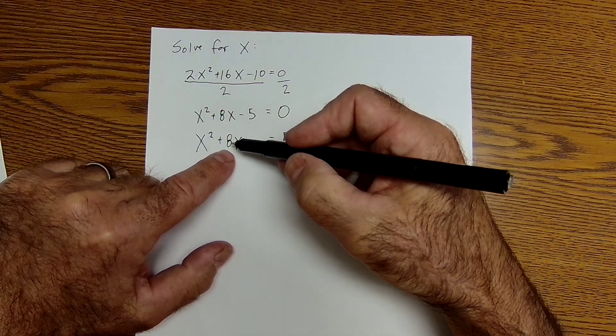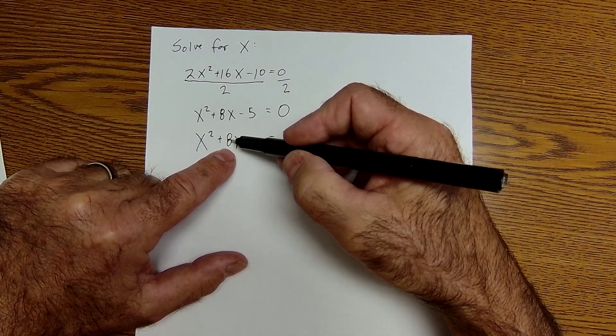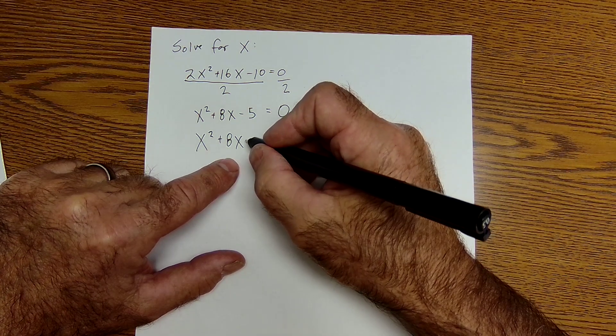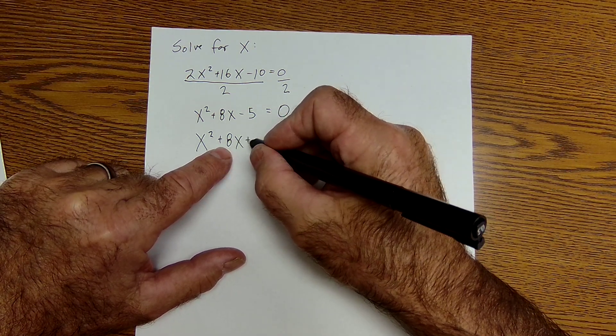Again, the algorithm is you take half of the B value, so half of 8 is 4, and then you square it. Half of 8 is 4, squared is 16.